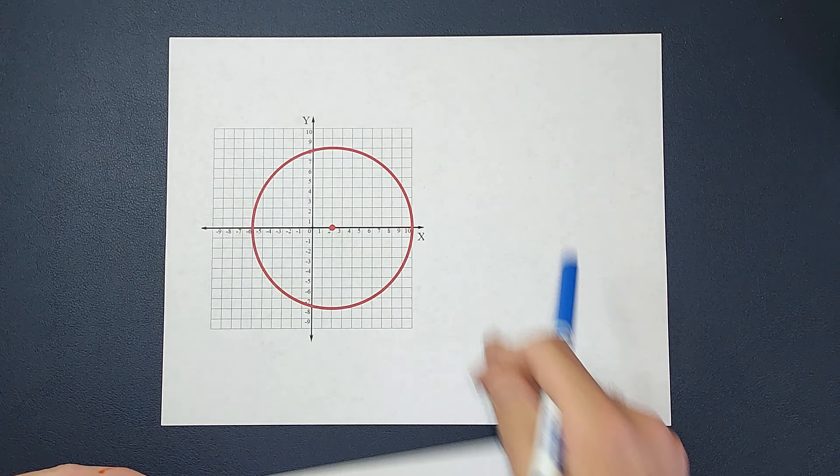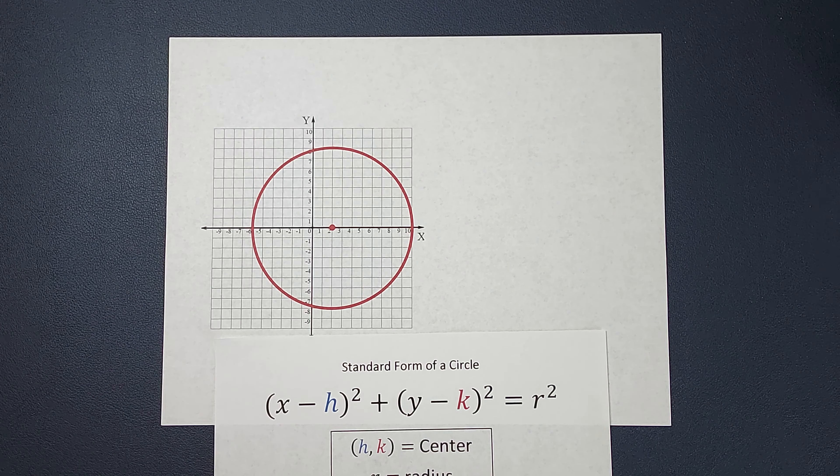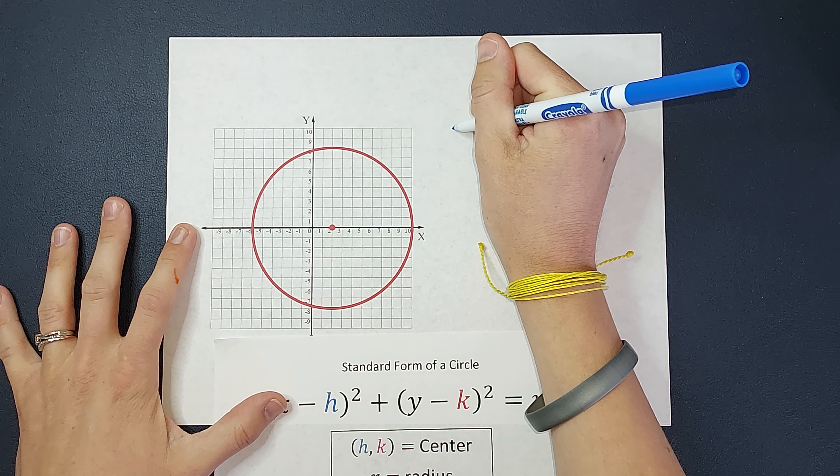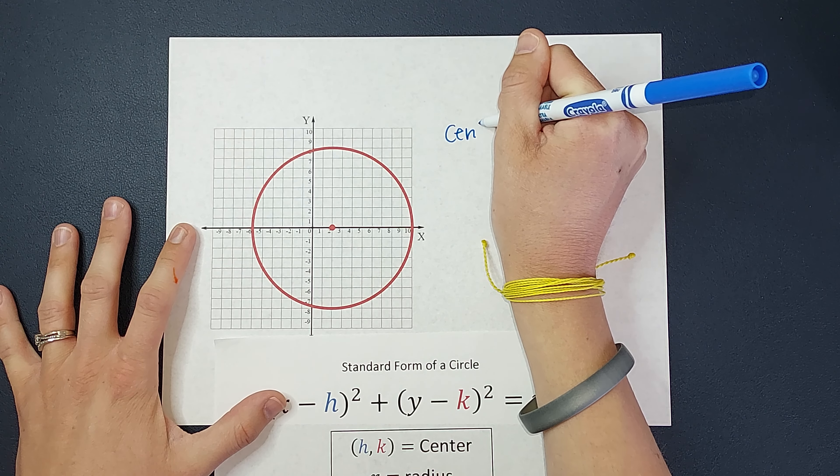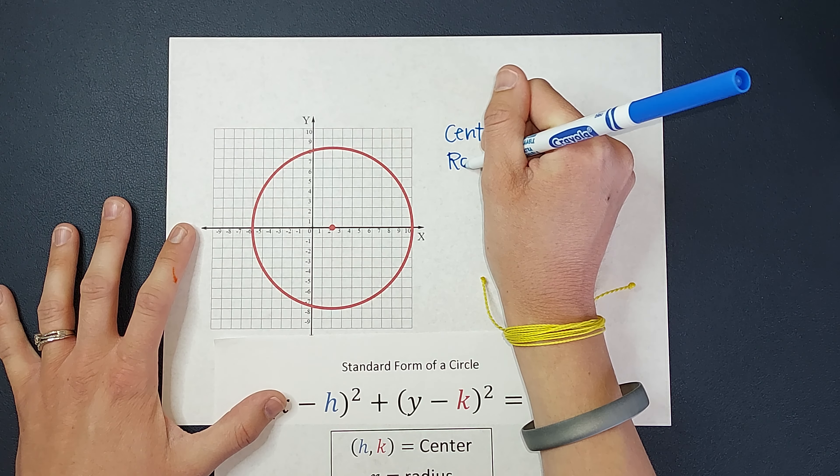And that's what this graph is going to tell us. So what I need to know to fill this in is my center, the center of my circle, and the radius of my circle.